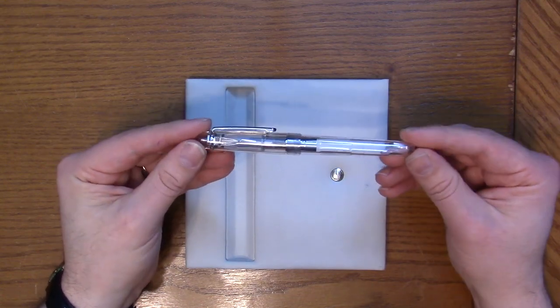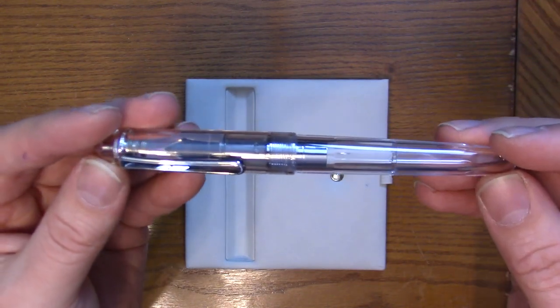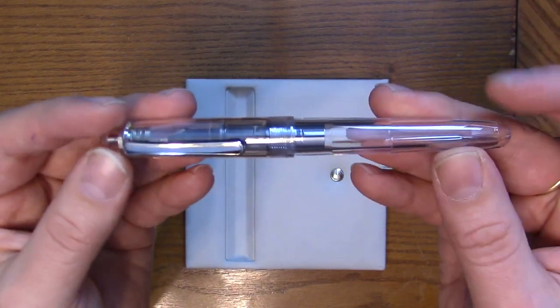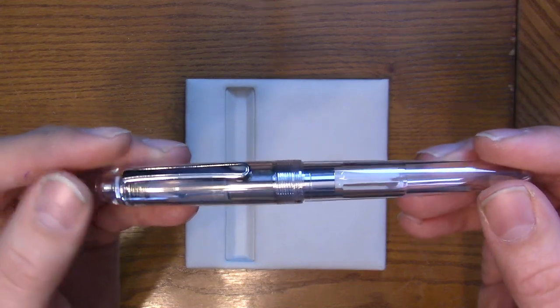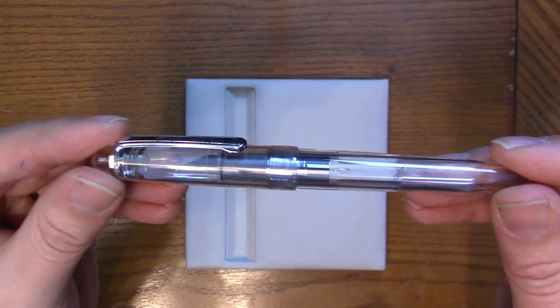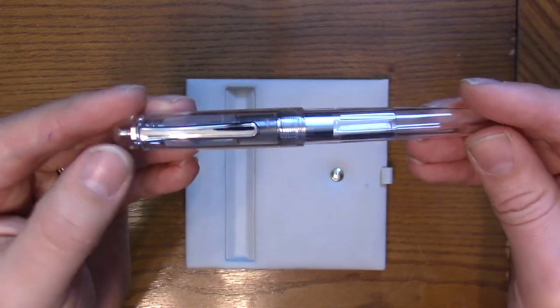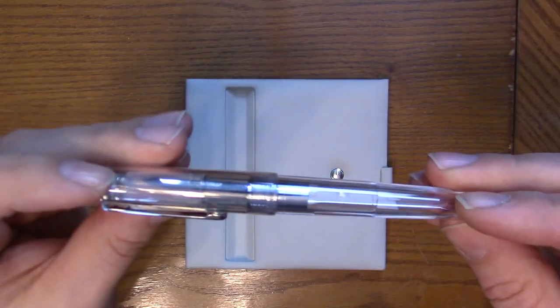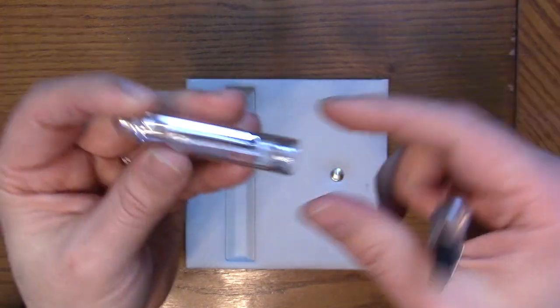Basically it's a standard 3776, but in this configuration the Psi is a pure, clear, transparent pen. It's got a few features that set it off and a very classic elegant look. We've got rhodium trim on this model which is a wise choice and really not much else going on.